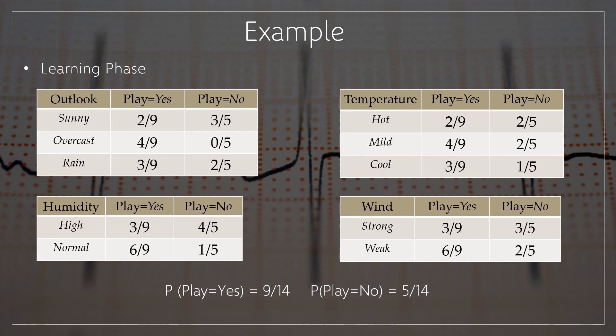Moving on to humidity: for humidity equal to high, play equal to yes equals 3 by 9 and play equal to no equals 4 by 5. For humidity equal to normal, play equal to yes equals 6 by 9 and play equal to no equals 1 by 5. Moving on to wind: for wind equal to strong, play equal to yes equals 3 by 9 and play equal to no equals 3 by 5. For wind equal to weak, play equal to yes equals 6 by 9 and play equal to no equals 2 by 5.